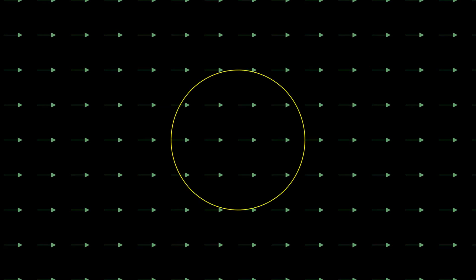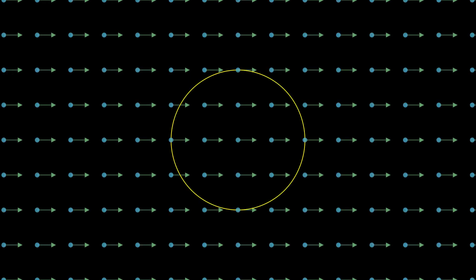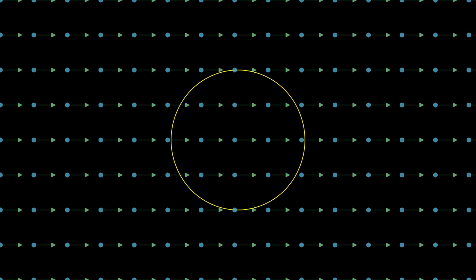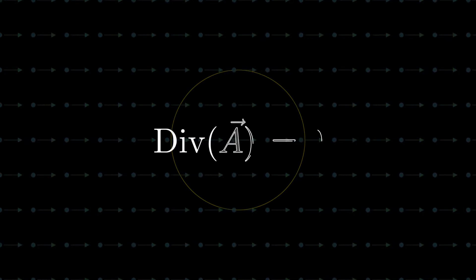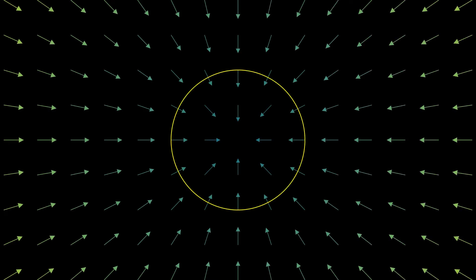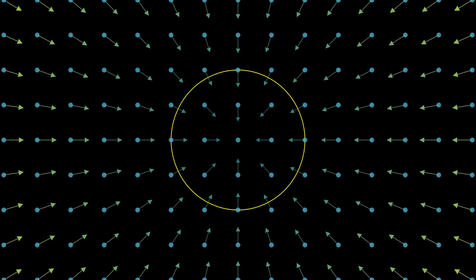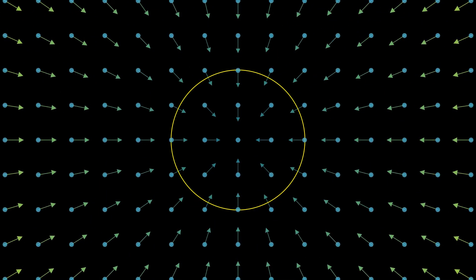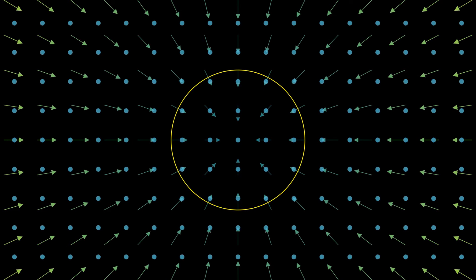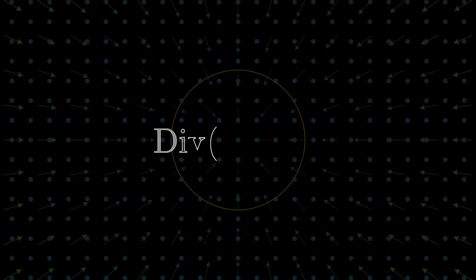Look at this case. Note the density of the particles inside the yellow circle. In this case, they don't seem to change, implying zero divergence. In the next case, particles tend to flow into the circle than out of it, implying a negative divergence.